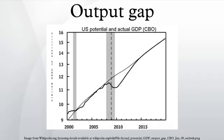For example, the longer jobless workers remain unemployed, the more their skills and professional networks can atrophy, potentially rendering these workers unemployable. For the United States, this concern is especially salient given that the long-term unemployment rate — the share of the unemployed who have been out of work for more than six months — stood at 36.9% in September 2013. Also, an underperforming economy can result in reduced investments in areas that pay dividends over the long term, such as education and research and development.